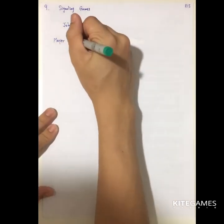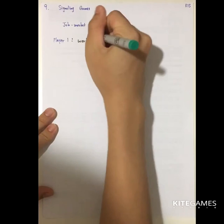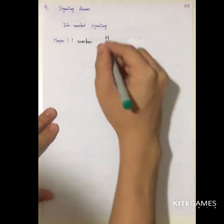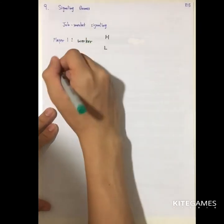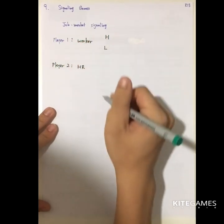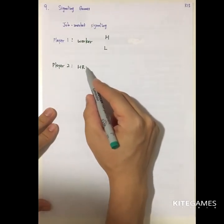Finally, we'll talk about a signaling game — a Bayesian sequential game. We're using the job market signaling game to describe Bayesian sequential games. Player one is the worker; they can be either highly productive (H) or low productive (L). Player two is the HR, who is considering whether to recruit the workers.